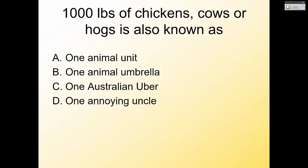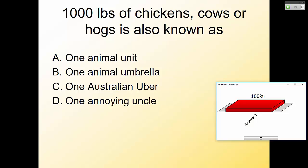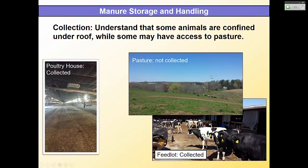Quiz question: 1,000 pounds of chickens, cows, or hogs is also known as one animal unit. Answer one is correct.